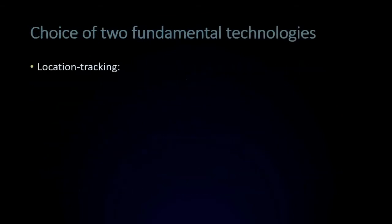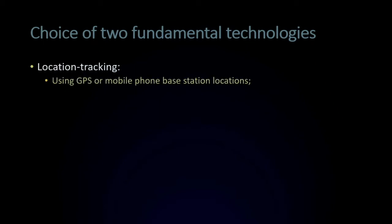We're looking at two fundamentally different technologies here. The first is generically called location tracking — where someone is at a particular time and place. It gives you a precise location and precise time, from which you can work out who's been close to whom. The most common technologies are GPS using satellite constellations, or mobile phone base stations — your mobile phone not only talks to one base station, but from the strength of signals from others, you can work out roughly where you are.